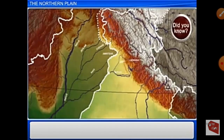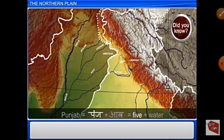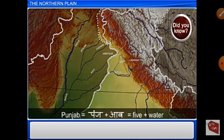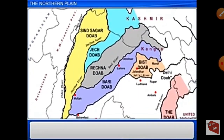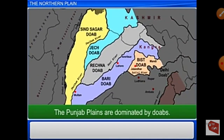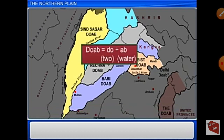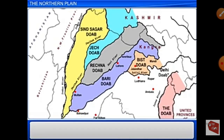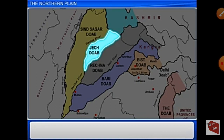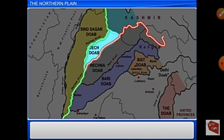Did you know Punjab is made of two words? 'Punj' means five and 'Aab' means river. Because of the flowing of five rivers, it is named Punjab. This region is dominated by Doab — 'Do' means two and 'Ab' means water — so Doab region means a piece of land drained by two water bodies. For example, Jech Doab is located between the rivers Jhelum and Chenab.